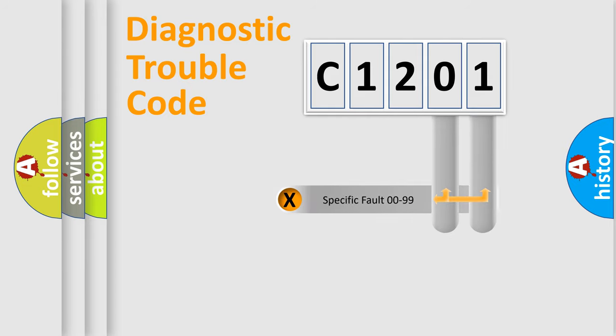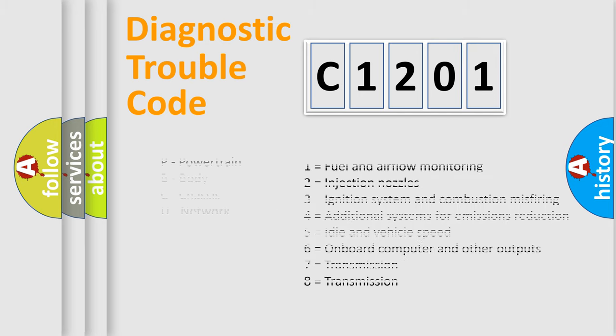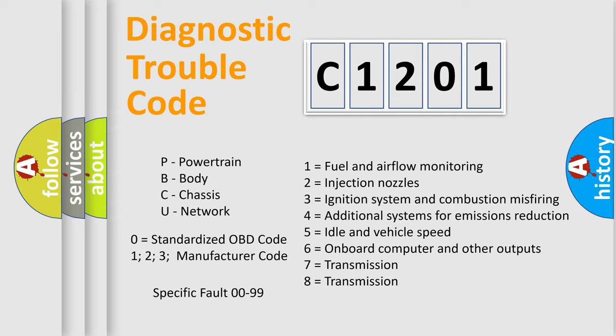Only the last two characters define the specific fault within the group. Remember that this division is valid only if the second character is zero.